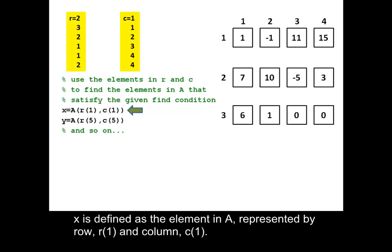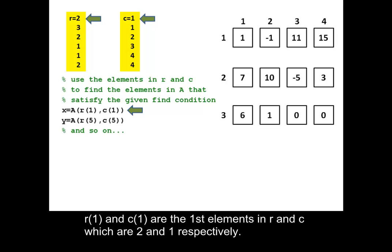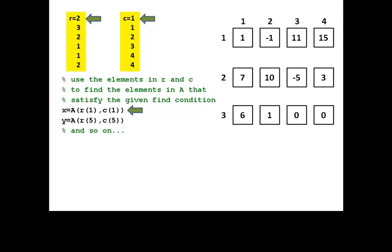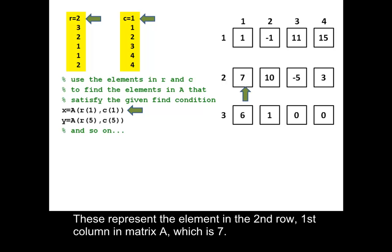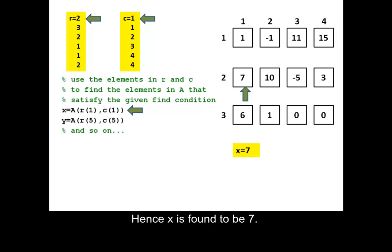X is defined as the element in A, represented by row R(1) and column C(1). R(1) and C(1) are the first elements in R and C which are 2 and 1 respectively. These represent the element in the second row, first column in matrix A, which is 7. Hence X is found to be 7.